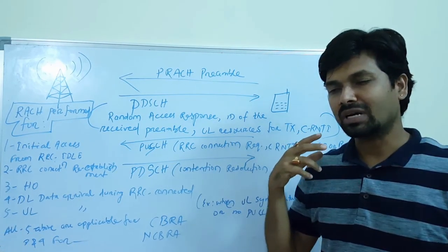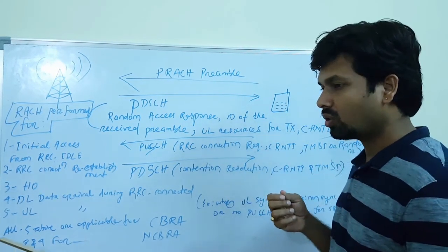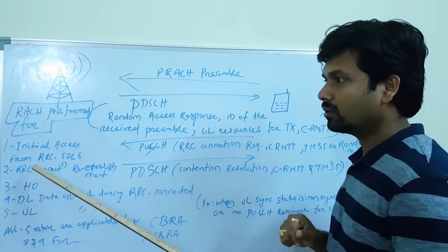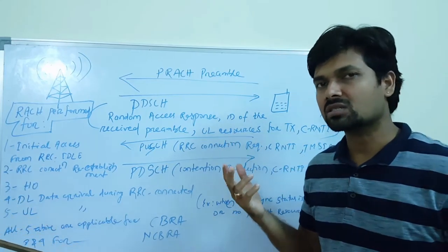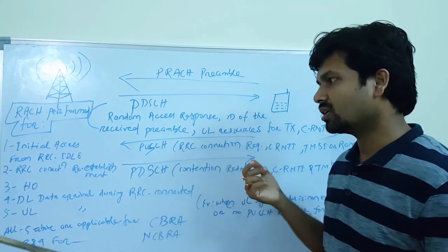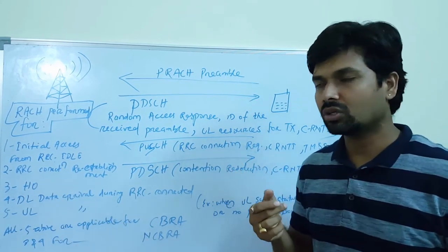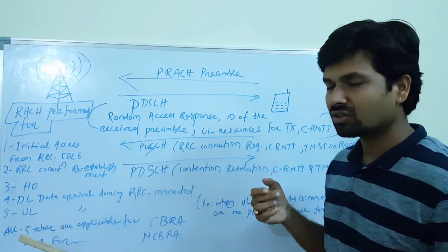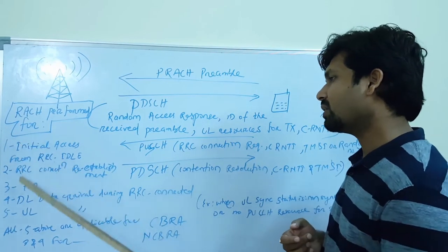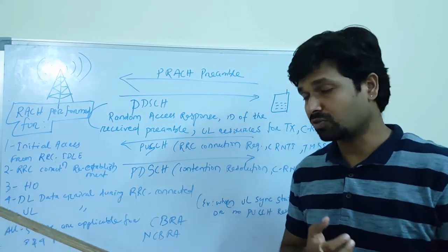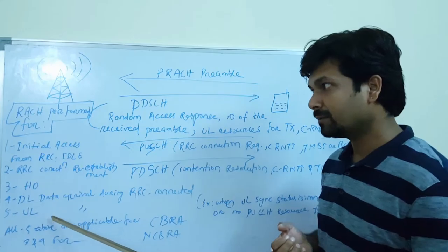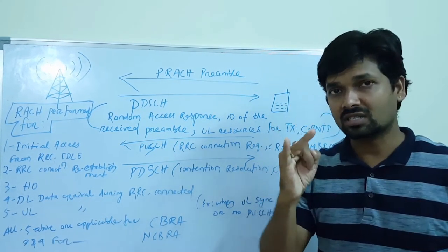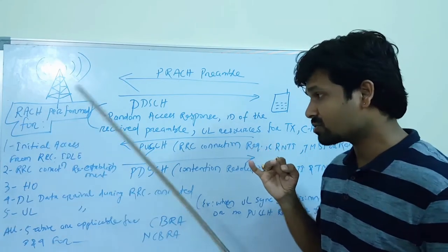The first reason is for initial access from RRC idle state. If the UE wants to do some uplink transmission, or receive a downlink transmission, or do initial access from idle state to connected state, or perform a handover, or do uplink synchronization — for these five reasons, the RACH procedure is performed.